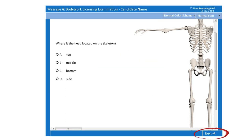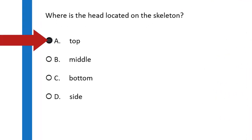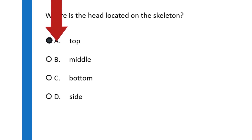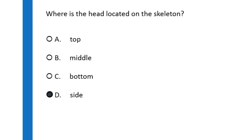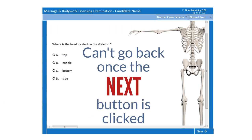Notice the Next button in the bottom right corner of this screen. The Next button moves you from the current question to the next question on the exam. Select an answer by clicking on the circle to the left of the answer using the mouse, or by selecting an answer's corresponding letter on the keyboard. Clicking on an answer you have already selected removes the selection and allows you to make a different selection. Do not choose Next until you are satisfied with your answer. Remember, you will not be able to return to the question once you move on.